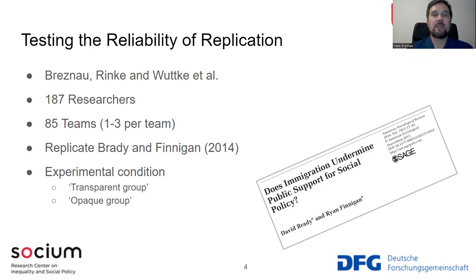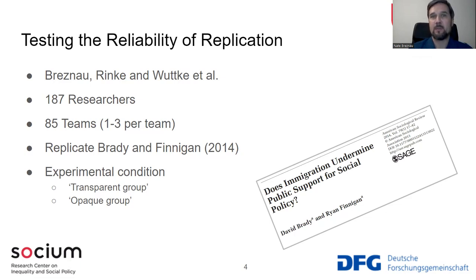We gave them an experimental condition. Half of the teams were randomly assigned to a transparent group, given the paper, the appendix, the Stata code, and basically all materials as transparent as one might expect. We also checked as principal investigators that the code does run and produce the same results. The other half were in an opaque group, where they did not receive the original paper, adjustments were made to hide the original results, they were given no code, only a method section which loosely described what was done — essentially the least transparent possible condition.